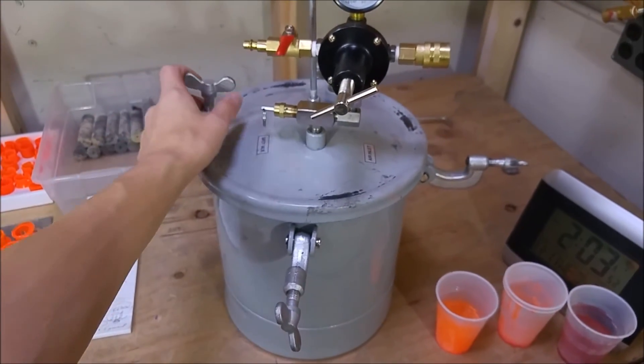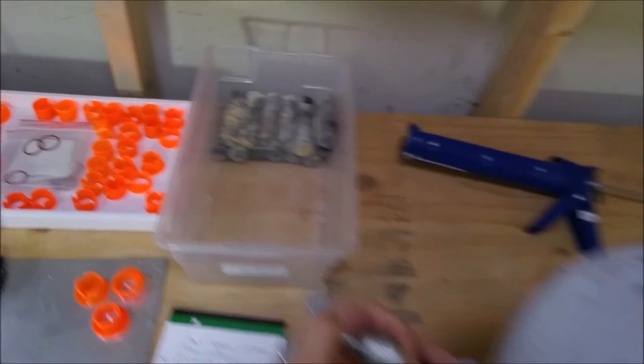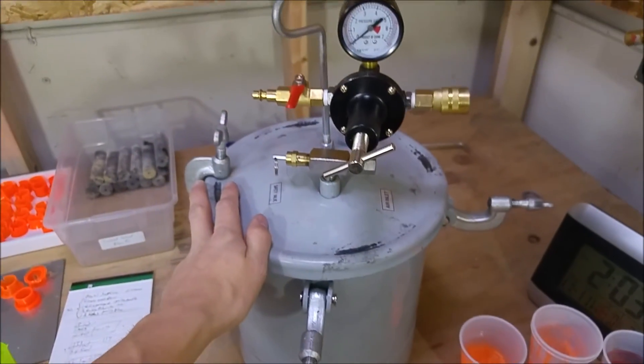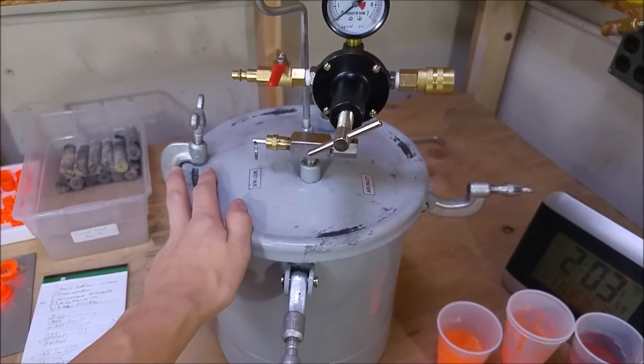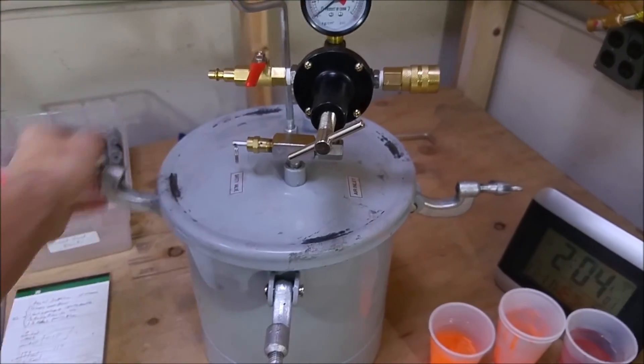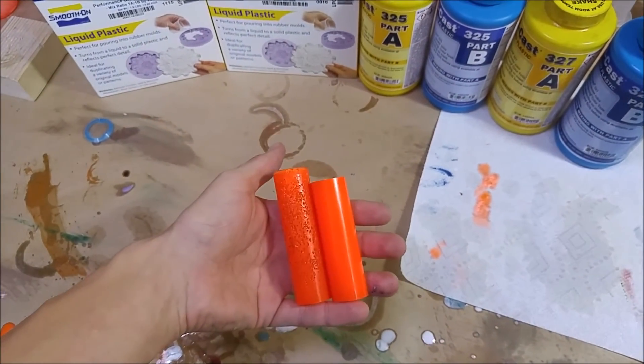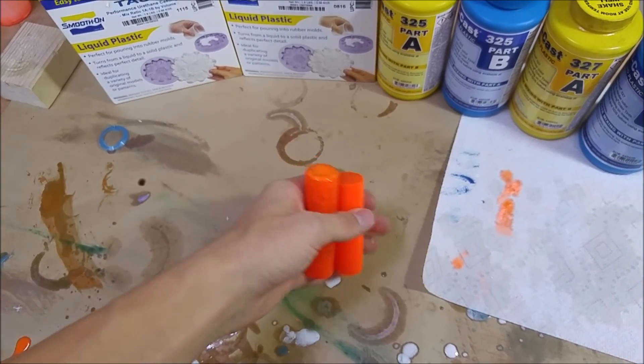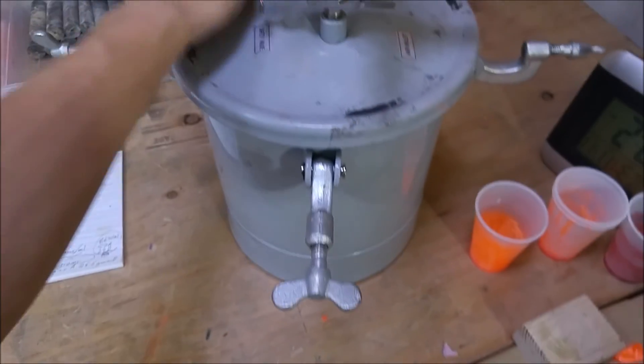You're able to do a whole lot with this. I mean, you can cast pen blanks in these things. You can cast all kinds of stuff for pretty cheap. So I highly recommend if you're going to look at any of this urethane plastic for casting of any sort that you're prepared to use some form of a pressure pot.